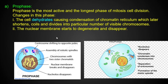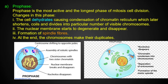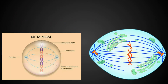The nuclear membrane starts to degenerate and disappear. Formation of spindle fibers begins. At the end of prophase, all chromosomes make their duplicates.